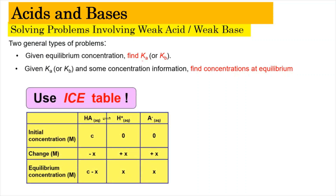Here is the ICE table for the weak acid. At the beginning you are given a certain concentration C. When there is a change, because the stoichiometry is 1, the reactant will be deducted by minus x. Therefore the products will be increased by +x each. And at equilibrium, since we are talking about a reversible reaction, we get C minus x, x, and x. From here you can determine the Ka or Kb values depending on the question.